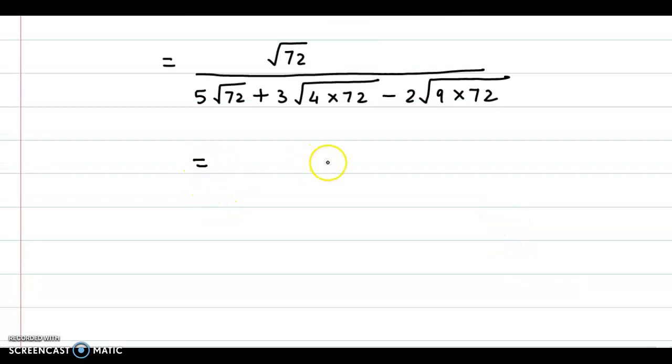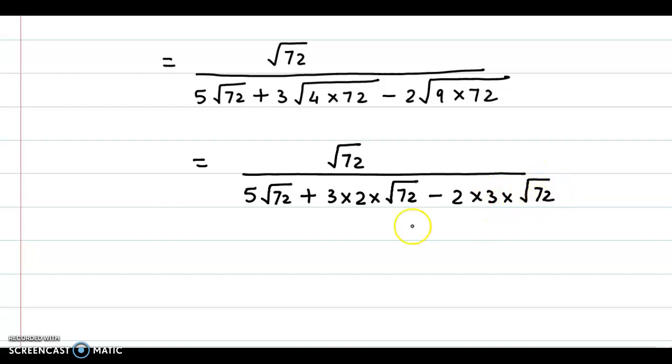In the numerator we have root 72 divided by 5 root 72 plus 3 into, now square root of 4 is 2 and we keep this root 72 as it is, so into root 72 minus 2 times square root of 9 is 3 times root of 72.